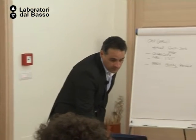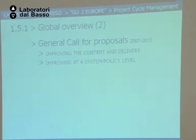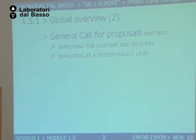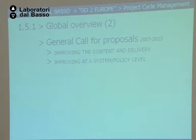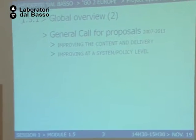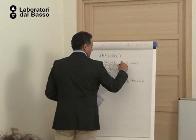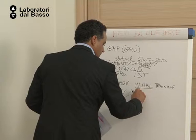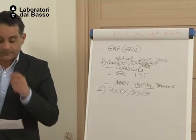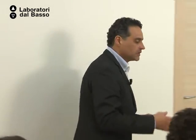The second big package of the call is improving at the system or policy level — the system of education, policy, rules that you have to follow. First, you have comparative studies. You know, for example, that in Scandinavia the education system is working very well — it's a very good and strong system. Finland is often used as an example.